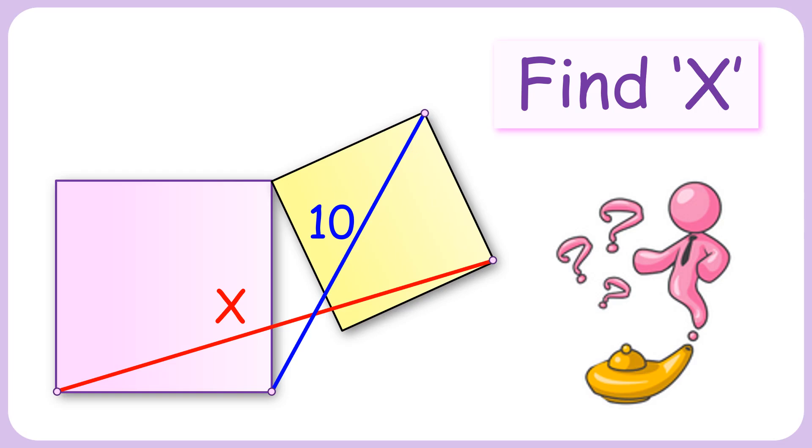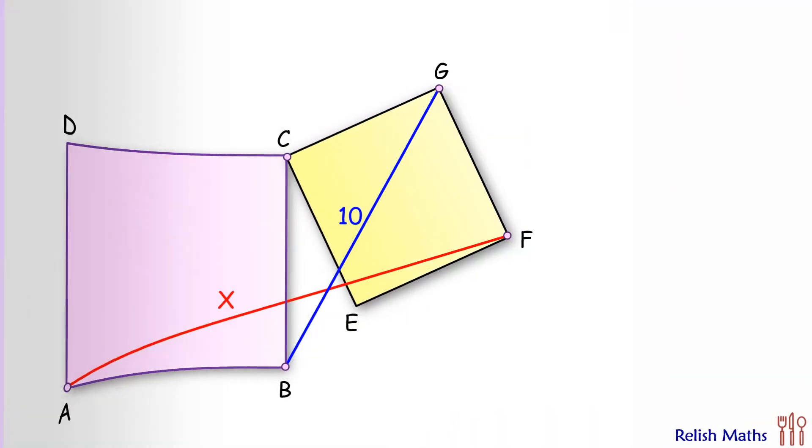Welcome to this interesting question. Given two squares of unknown dimension, the length of the blue line segment is 10 centimeters. With this limited data, we have to find the length of the red line segment, or value of x. Let's check this elegant solution.